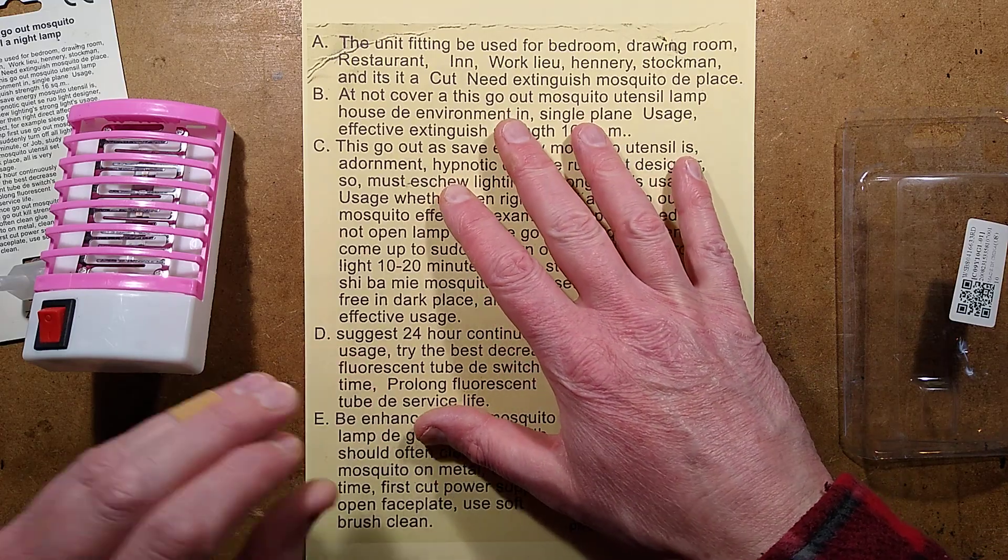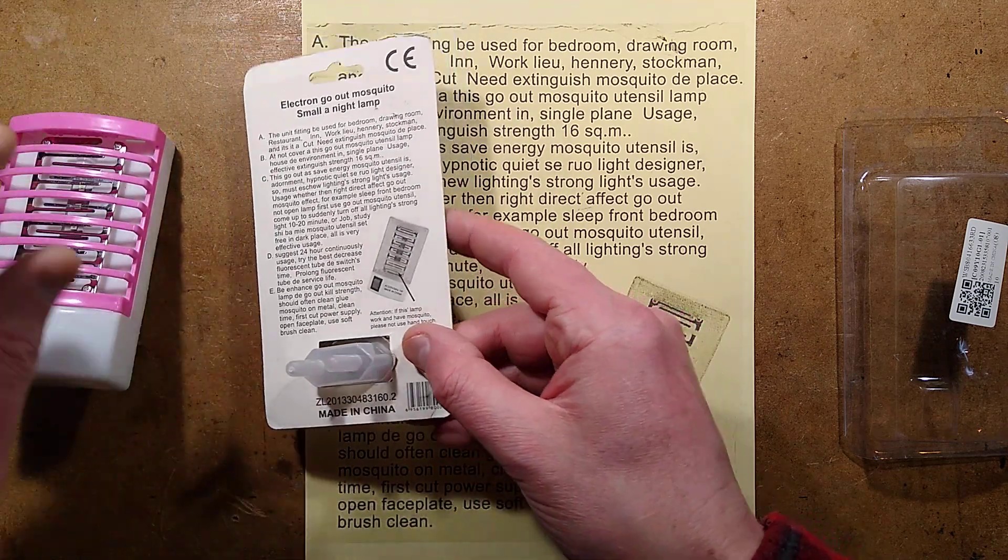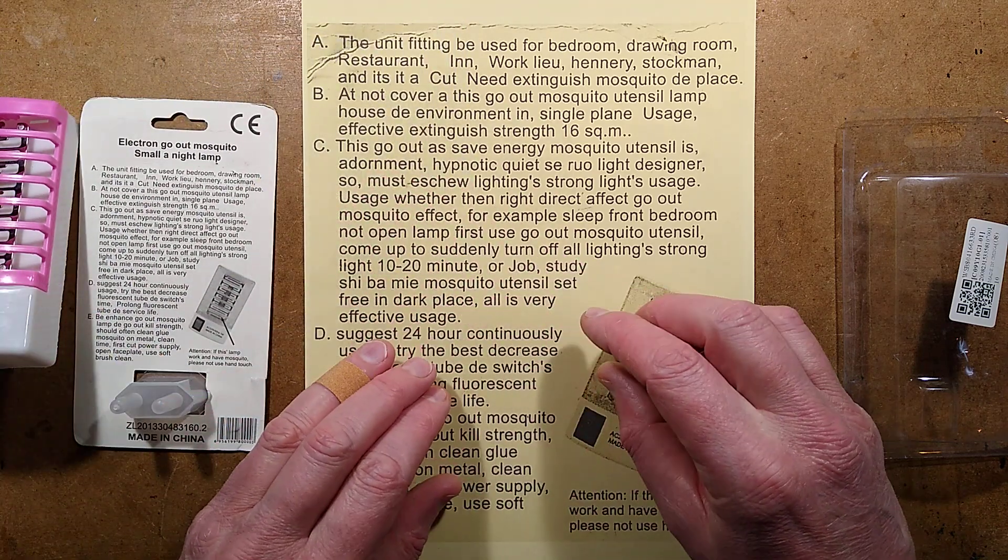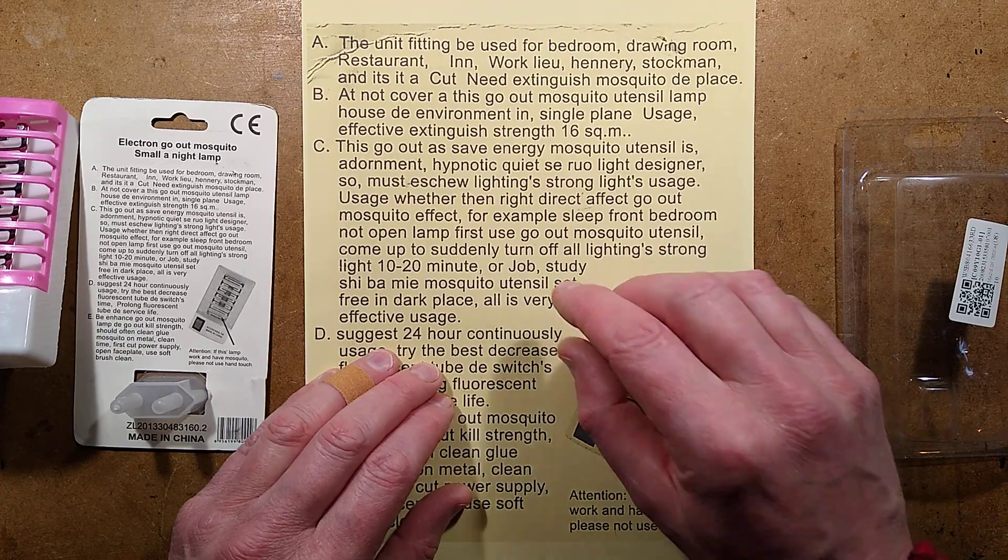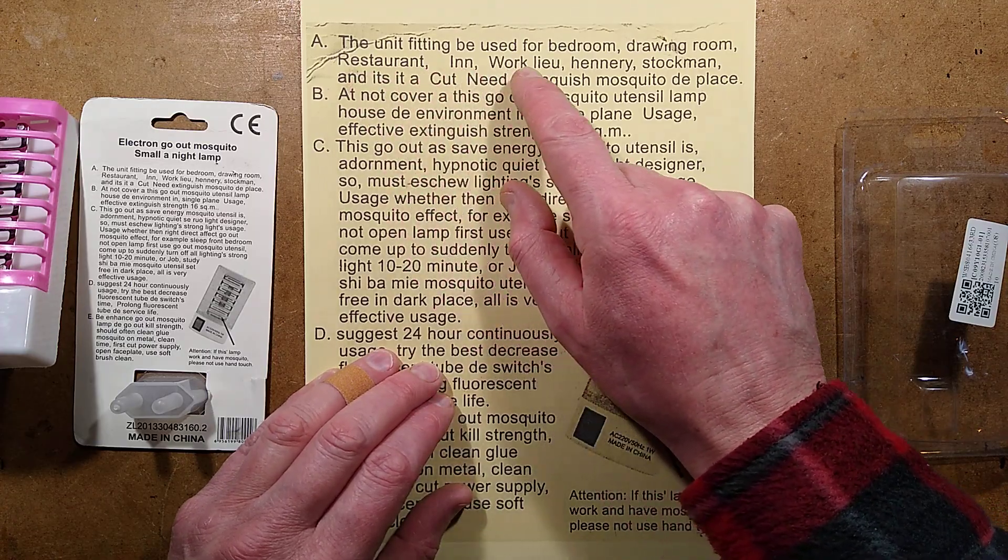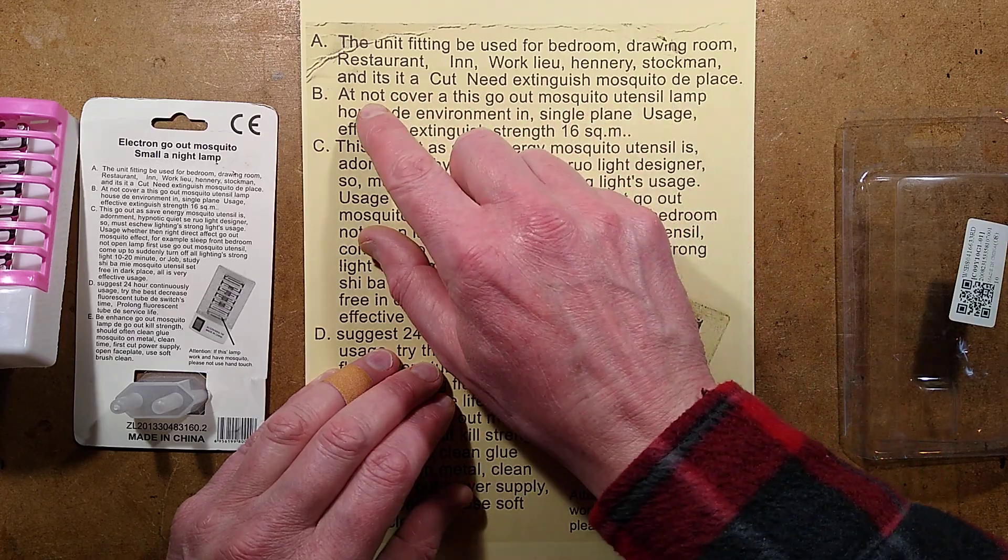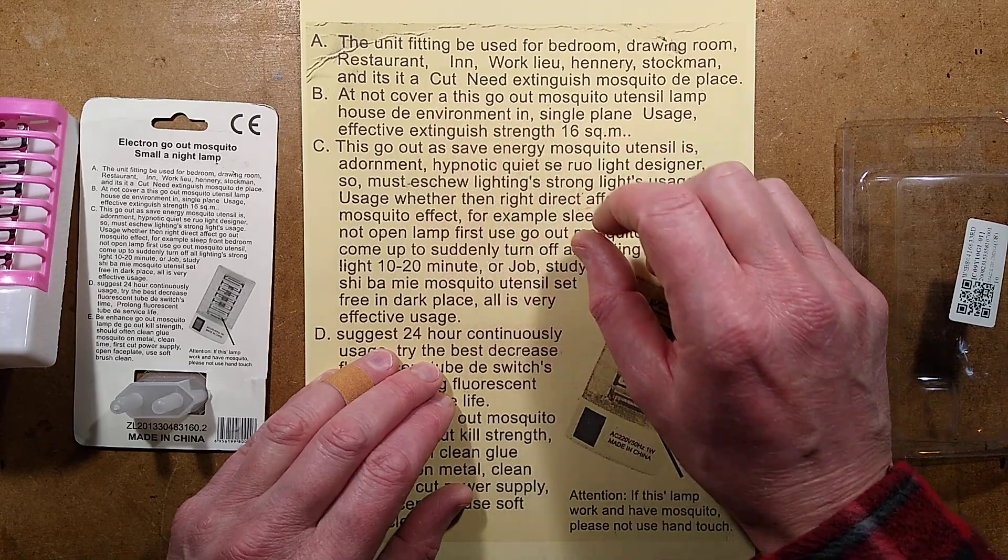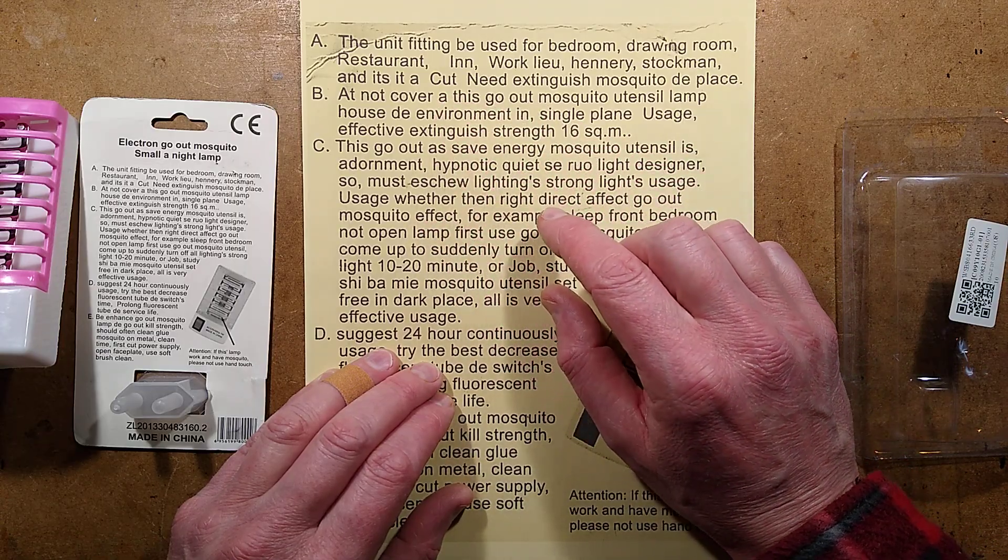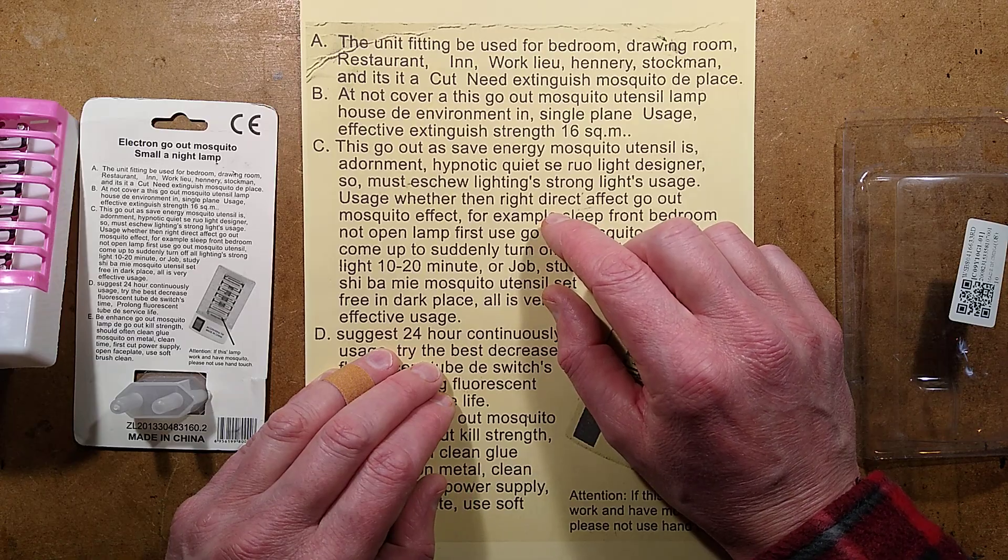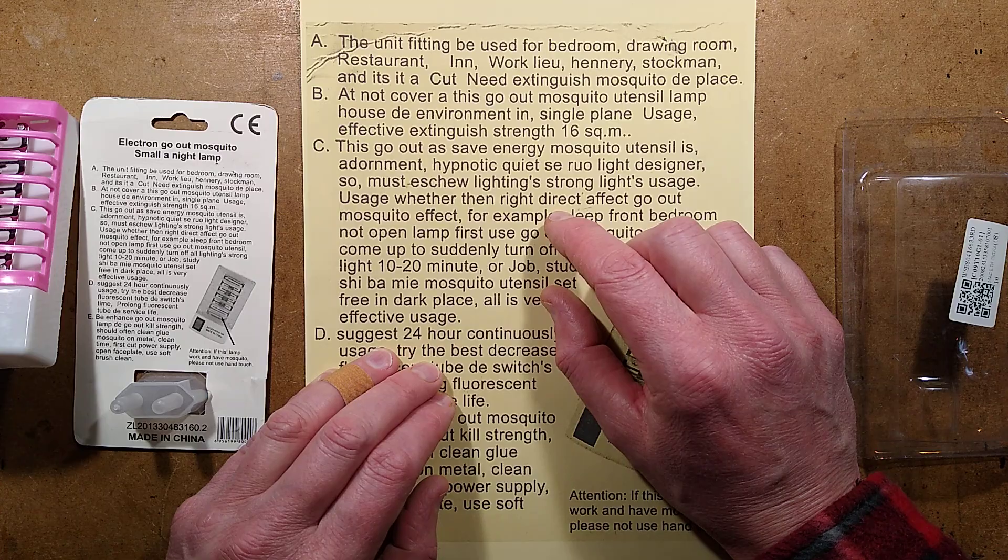I shall read the instructions of this because they are just immaculate Chinglish and you can try and work out what they actually mean. It's like Jackanory. It's story time. Are you ready? The unit fitting be used for bedroom, drawing room, restaurant in Worklio, Henry Stockman, and it's at a cut need extinguish mosquito de place. At not cover a this go-out mosquito utensil lamp, house de environment in single plane usage, effective extinguish strength 16 square meters.